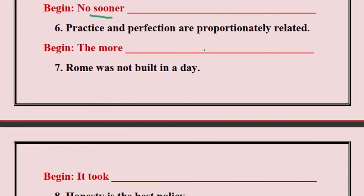Come to sentence number six: Practice and perfection are proportionately related. How will you write it if you have to start with 'the more'? The more one practices, the more perfect he becomes. It is directly proportional — you have done this in science.